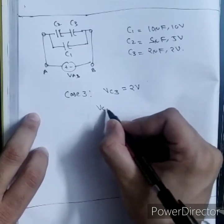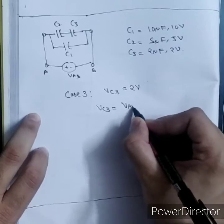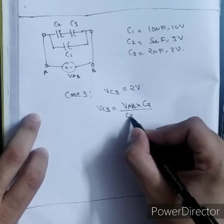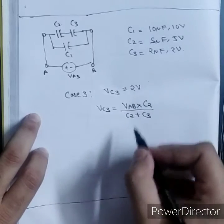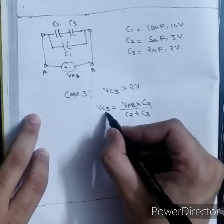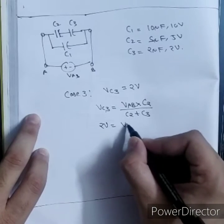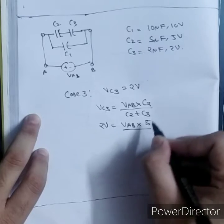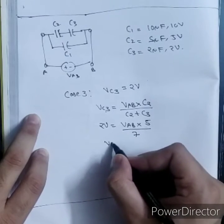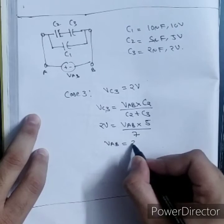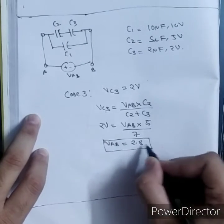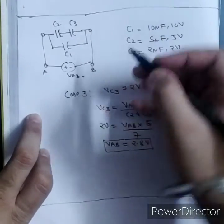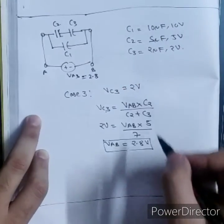Using voltage division rule, VC3 is equal to VAB into opposite capacitance, that is C2, divided by C2 plus C3. This is voltage division rule formula. VC3 is 2V. VAB we have to find. C2 is 5 divided by 5 plus 2 is 7. From here VAB is 2.8V.